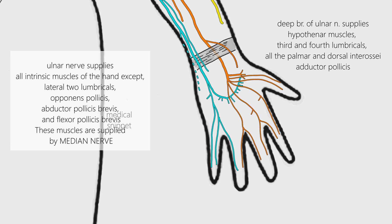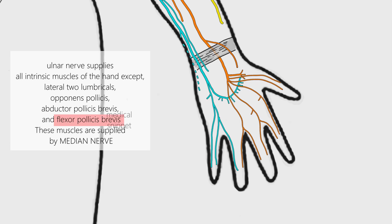It should be noted that in some people the flexor pollicis brevis has dual nerve supply — the superficial head is supplied by median nerve, and the deep head of flexor pollicis brevis is supplied by ulnar nerve.